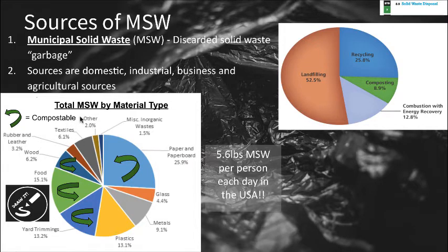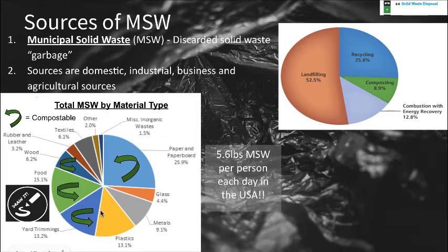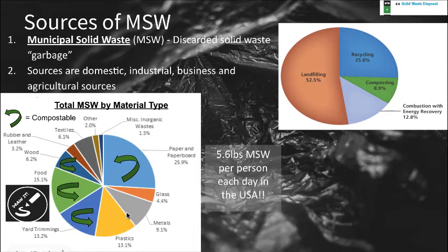This is a 'draw it' section. I want you to look at the different types or materials of things we throw away by percentage. Paper and paperboard make up about 26% of our total waste. The other big ones are food waste at 15%, yard waste at 13%, and plastics at 13%. About 5.6 pounds of waste is produced per person each day. Items marked with a green arrow are compostable, while plastics, metals, and glass are recyclable — a good chunk that doesn't need to go to landfills.